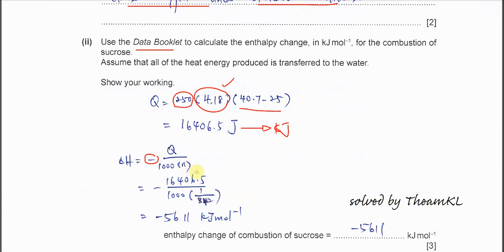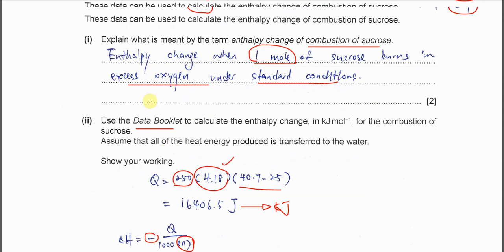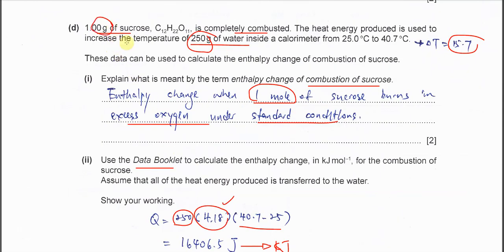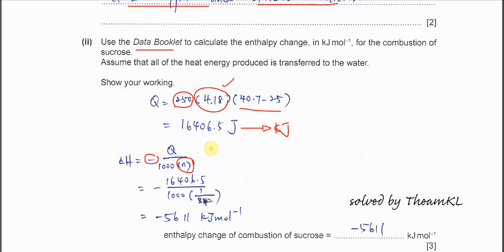In this combustion, the reactant that is used to produce the heat is the sucrose itself. So you must use the moles of sucrose here. It's one gram given here, one gram, over its molar mass.